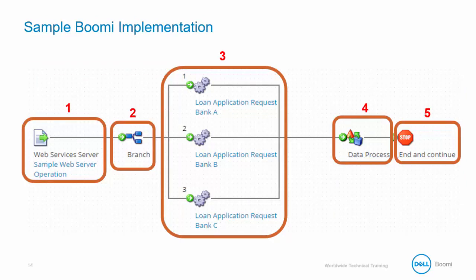Here we have a sample process. Step one is to set up a web service listener. The start step will use the web services server connector. There is no connection — the connection is actually the Atom's shared web server configured in Atom Management Console. The operation component determines the specific endpoint based either on the resource path or SOAP action, and will be listening for both SOAP and REST requests. Step two will branch the document to three different processes. In step three, three sub-processes act on the document and send back a response into the master process. In step four, the responses from the three sub-processes are combined into a single document. In step five, you would normally have a connector here, but the point is that the process ends and does not return any response — therefore it is asynchronous.